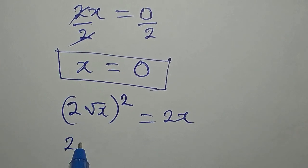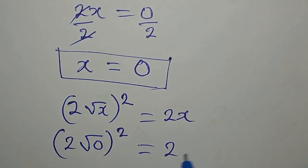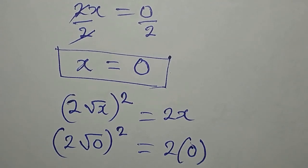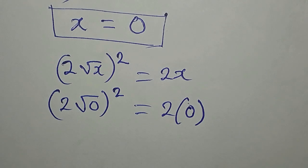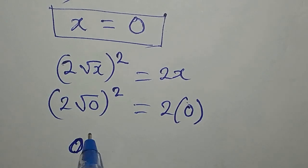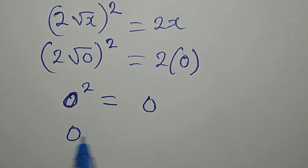Now, we have 2 square root of 0 to the power of 2, equal to 2 times 0, and 2 times 0 is already 0. Square root of 0 is 0, 2 times 0 is 0 squared, on the other side we have 0, 0 squared is 0.